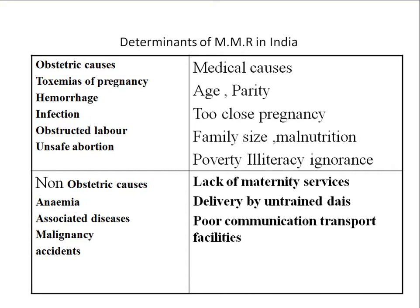Hookworms are a main cause of anemia in antenatal mothers. If the mother is anemic, treat with deworming; if she has malaria, treat the malaria, thereby preventing anemia. Other non-obstetric causes include cardiovascular disease, Rh incompatibility, endocrinal disorders, uterine fibroids, malignancies, and accidents.